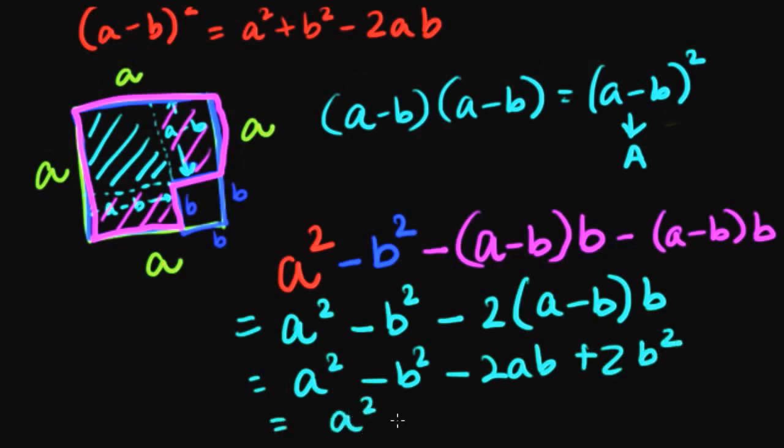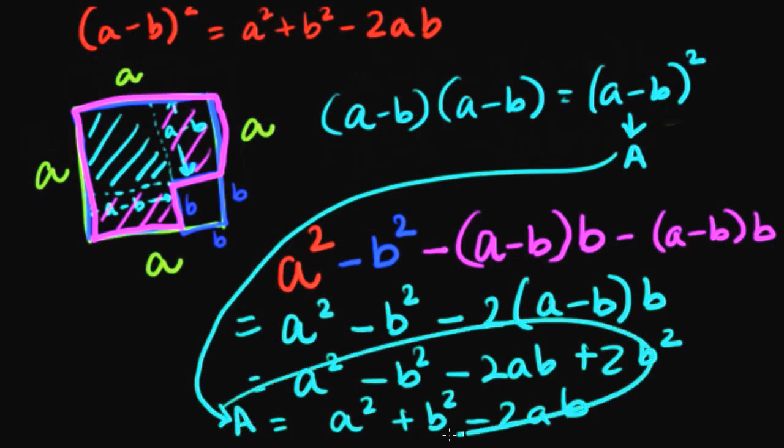So we're left with a square plus b square minus 2ab, and this is my A. And that's all.